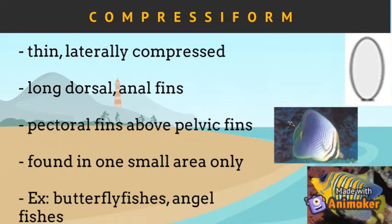The second type of body form is the compressiform. Fish with a compressiform body shape have a thin and laterally compressed body, with body depth at least one-third of its standard length. The dorsal and anal fins are typically long, while the pectoral fins are located high on the body and pelvic fins immediately below. They are found in one small area such as coral reefs, seagrass beds, sandy bottoms, and estuaries. Examples include butterflyfishes, angelfishes, and carangids.